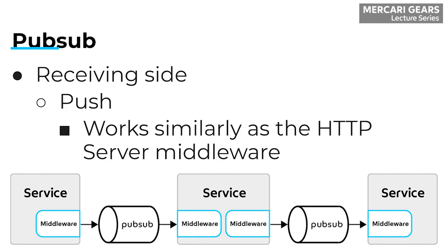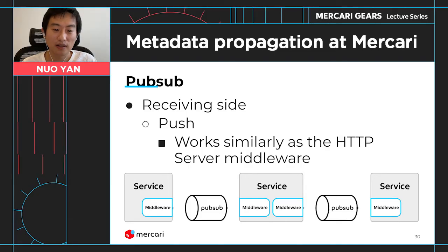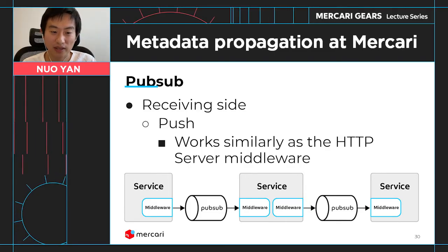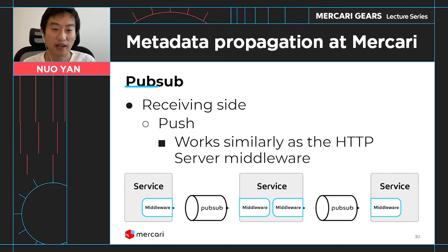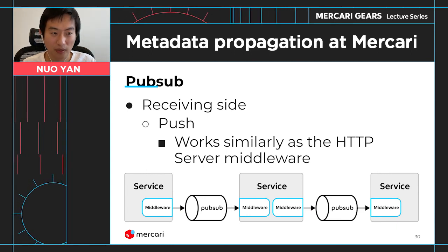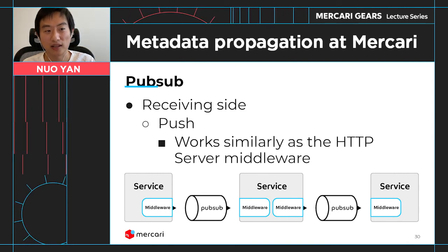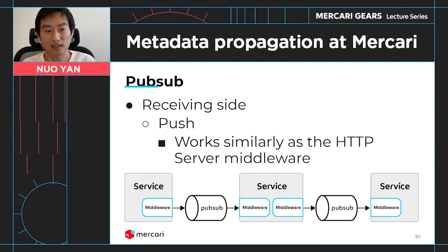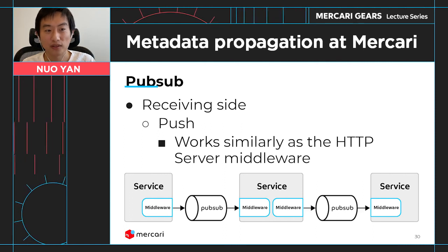For push, how it works is that you register an endpoint with the PubSub infrastructure, and once it gets the message you care about, it sends an HTTP call to your endpoint with the message in the body. It works almost exactly the same as the HTTP server middleware, except that in the HTTP server middleware case, we are looking at the request headers to get the metadata out. In this case, all of the PubSub message will be in the request body, so we need to look at the request body and find the attributes key, then look for the metadata within that.